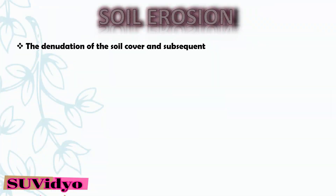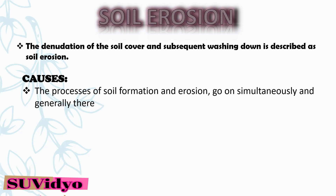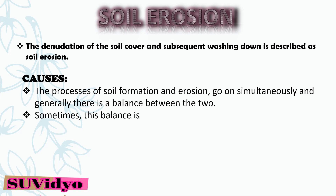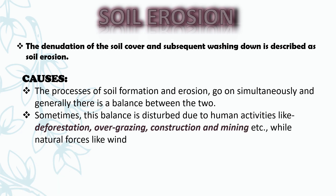The denudation of the soil cover and subsequent washing down is described as soil erosion. The processes of soil formation and erosion go on simultaneously and generally there is a balance between the two. Sometimes this balance is disturbed due to human activities like deforestation, overgrazing, construction and mining, while natural forces like wind, glacier and water also lead to soil erosion.